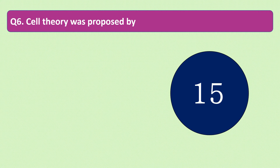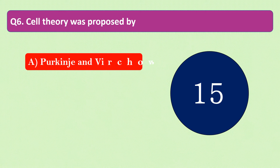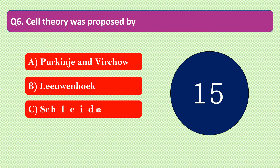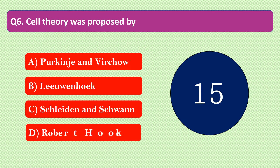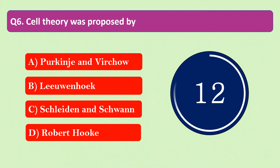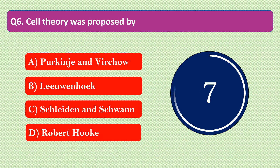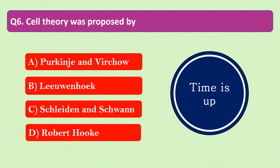Question number 6: Cell theory was proposed by dash. The options are A. Purkinje and Virchow, B. Leeuwenhoek, C. Schleiden and Schwann, or D. Robert Hooke. Your time starts now. Your time is up and the right answer is option C: Schleiden and Schwann. Cell theory was proposed by Schleiden and Schwann.